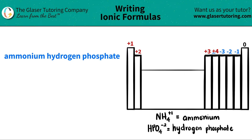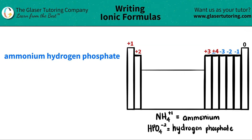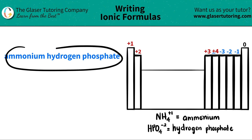Now here I see that I have three different things — three different words. We have ammonium, we have hydrogen, and we have phosphate. When we're making an ionic compound, we need to find two components. There's never going to be three different things in your ionic compound; there's only going to be two. So basically we need to find out the two different components of ammonium hydrogen phosphate.